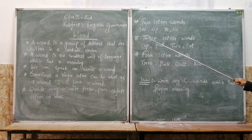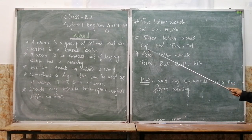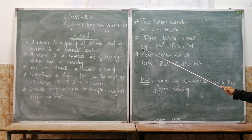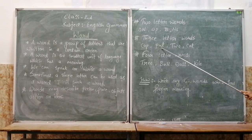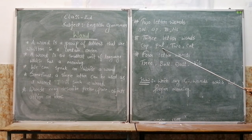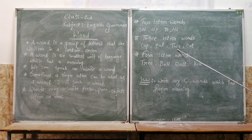Now we are going to learn about three-letter words. C-A-P, 'cap' — C is the first letter, A is the second letter, and P is the third letter, so this is a three-letter word. P-U-T, 'put' — P is the first letter, U is the second letter, and T is the third letter. T-W-O, 'two' — this is also a three-letter word. C-A-T, 'cat'.